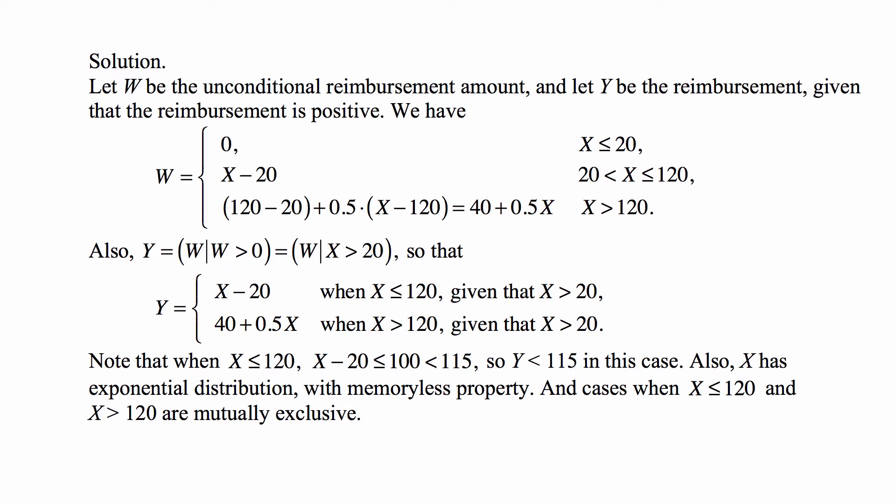Y is really w given that w is positive, which is the same as w given that x is greater than 20. So y equals x minus 20 when x is less than or equal to 120, given that x is more than 20. Note that when x is less than or equal to 120, x minus 20 is less than or equal to 100, which is the maximum reimbursement for x in that range — and that's less than 115. So y is always less than 115 in this case.